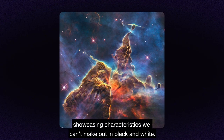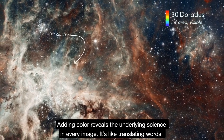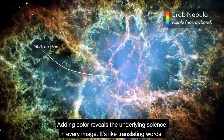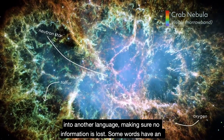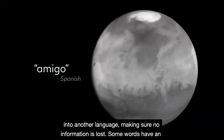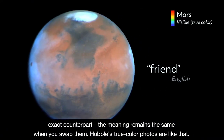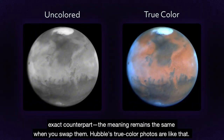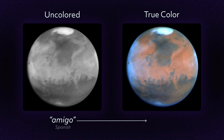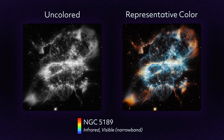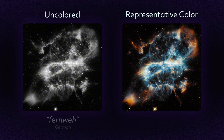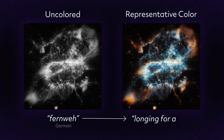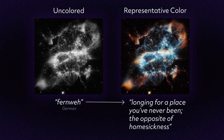Showcasing characteristics we can't make out in black and white, adding color reveals the underlying science in every image. It's like translating words into another language, making sure no information is lost. Some words have an exact counterpart — Hubble's true color photos are like that, a direct translation using broad filters in wavelengths we can see. Other words can't be translated directly; when we use narrowband filters or peer outside the visible spectrum, it requires more work.